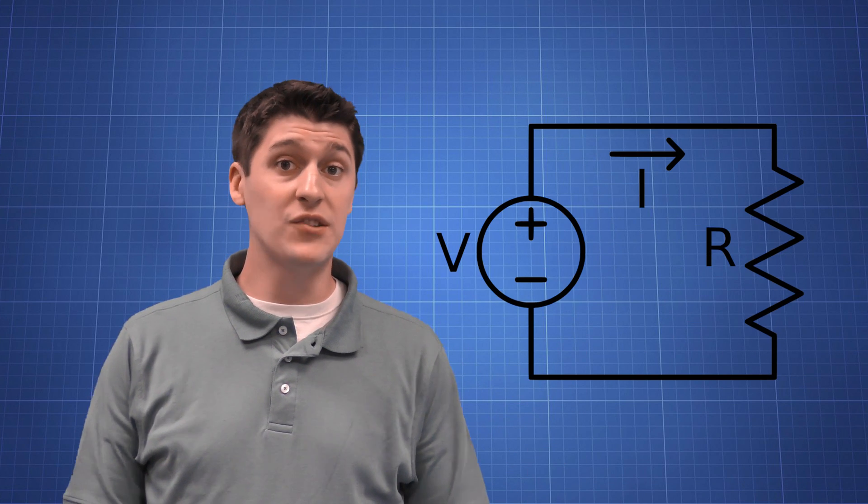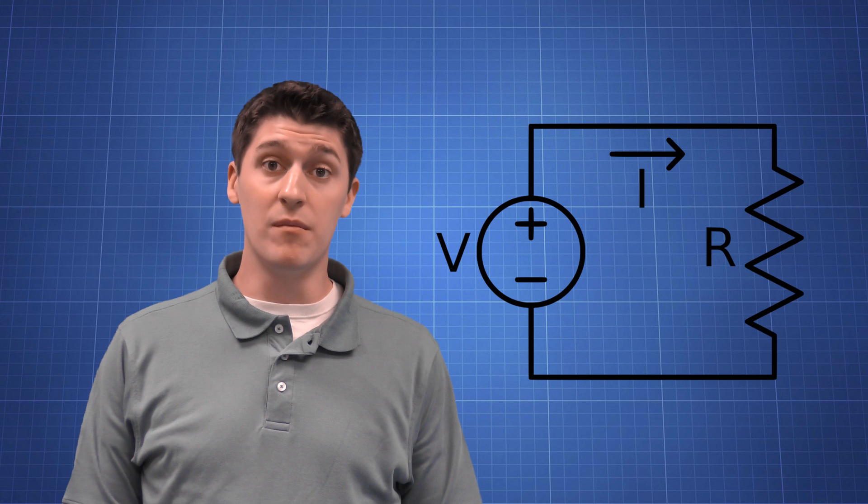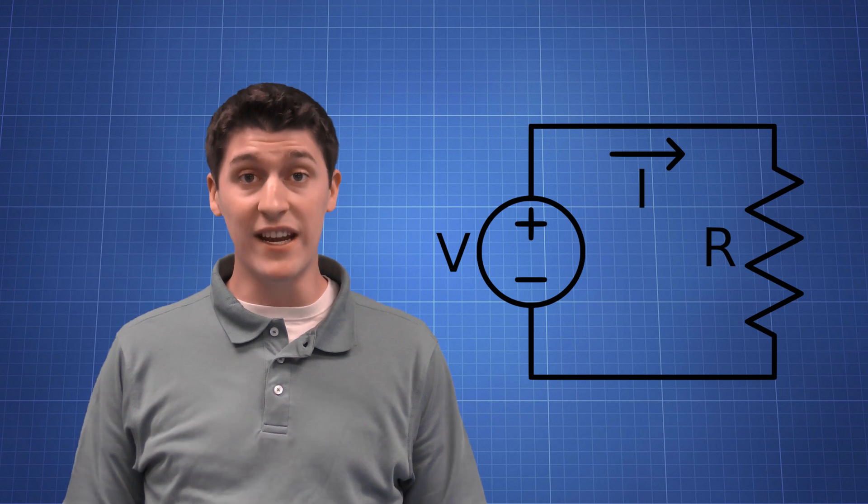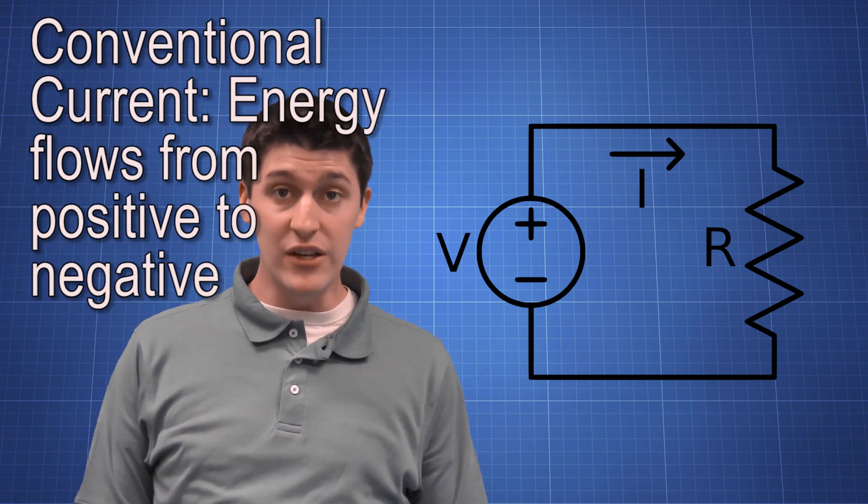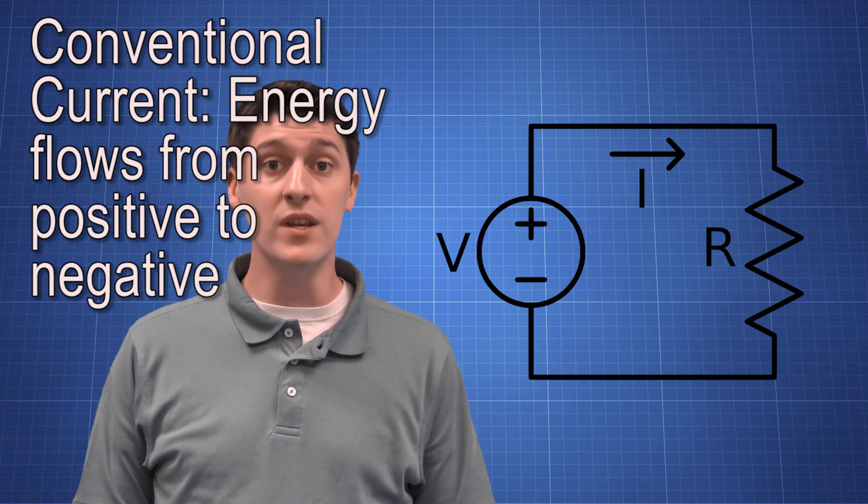Electricity is made up of flowing electrons. Electrons have a negative charge. Let's look at a circuit diagram. On a circuit diagram, electricity moves from positive to negative. We call this conventional current. It's what we use in engineering.